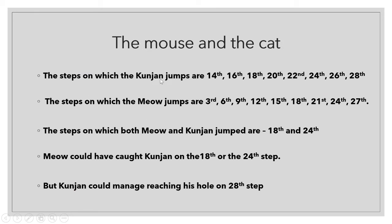The steps on which Kunjan jumps are the 14th, 16th, 18th, 20th, 22nd, 24th, 26th, and 28th — because Kunjan could jump only two steps at a time. The steps on which Meow jumps are the 3rd, 6th, 9th, 12th, 15th, 18th, 21st, 24th, and 27th. Did you notice that Meow is jumping on steps which are in the table of 3? 3×1=3, 3×2=6, 3×3=9, 3×4=12, 3×5=15, 3×6=18, 3×7=21, 3×8=24.